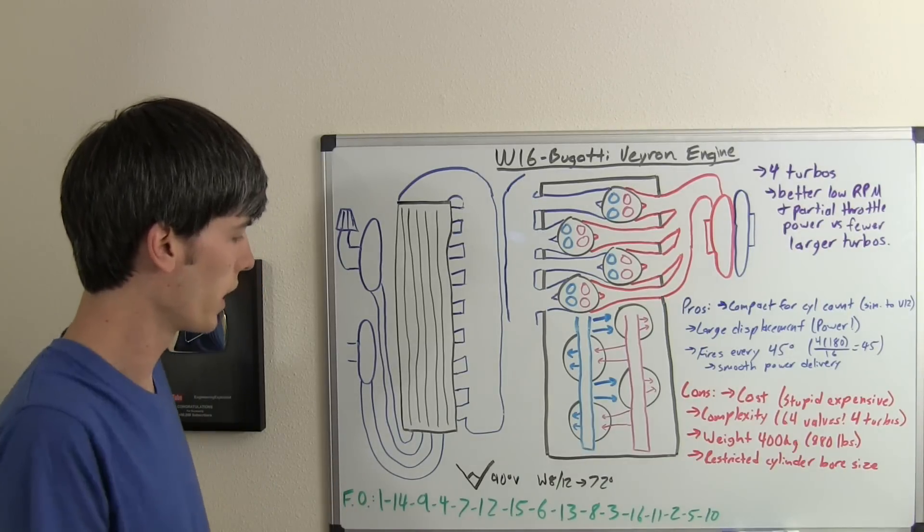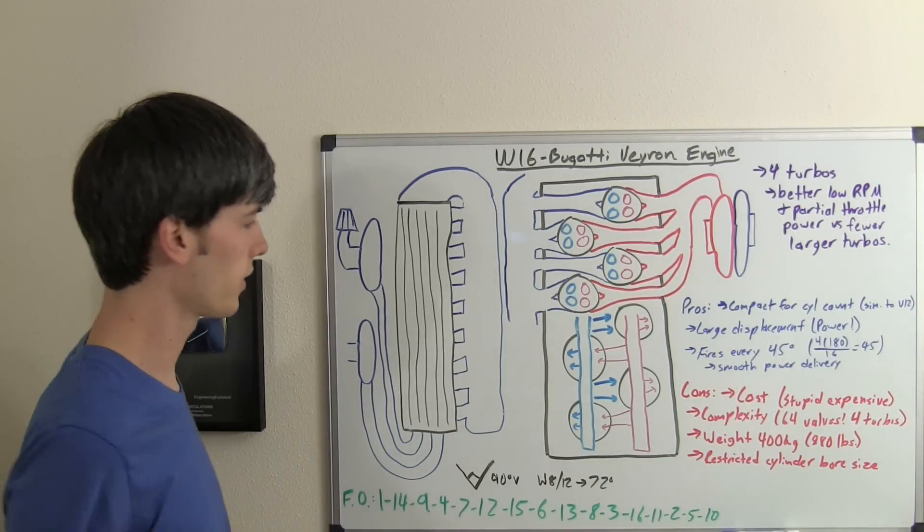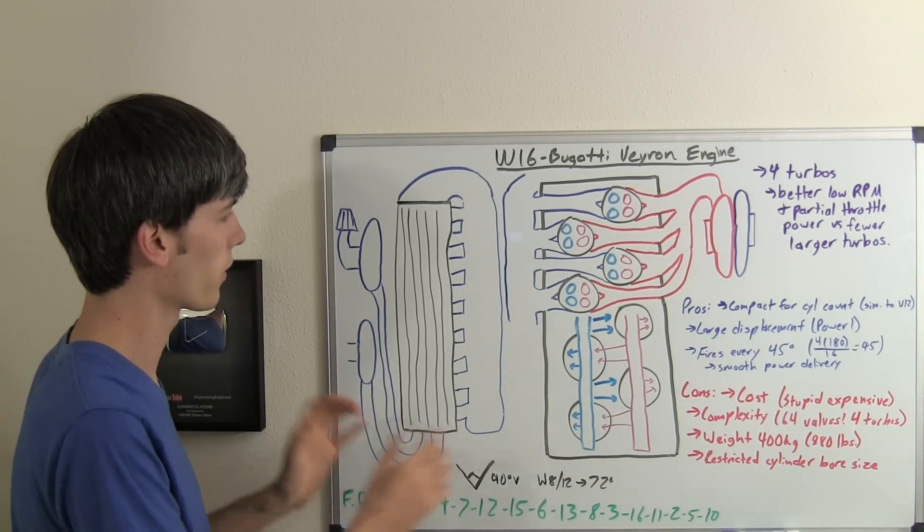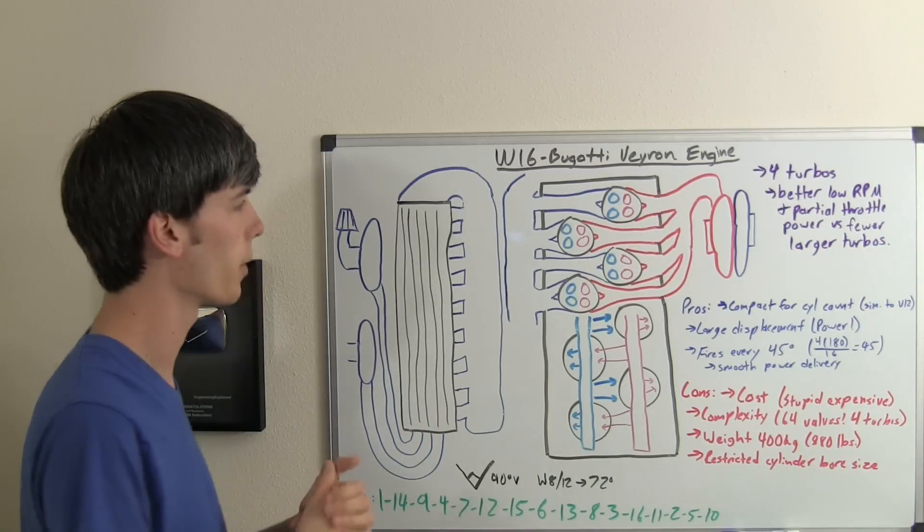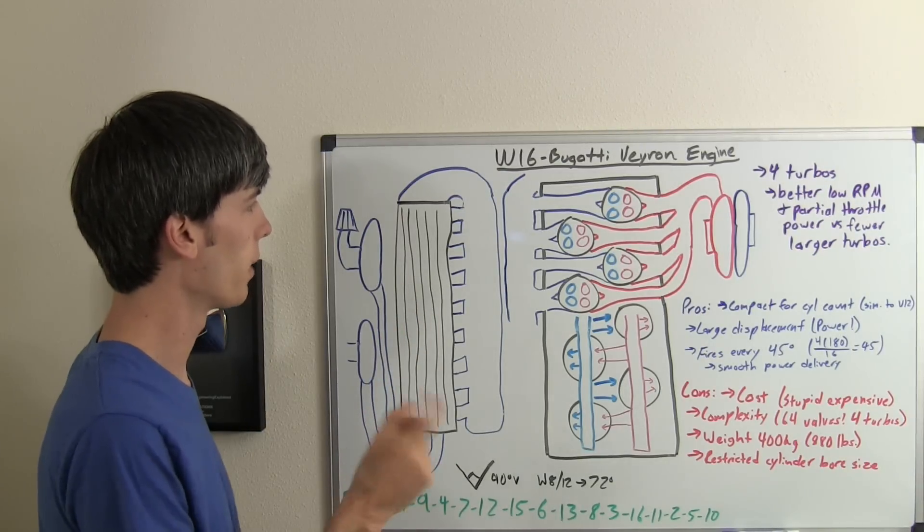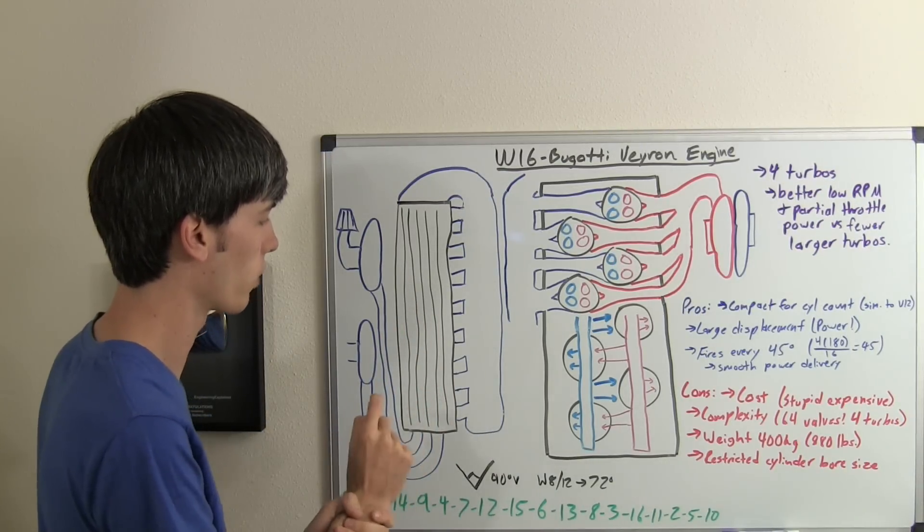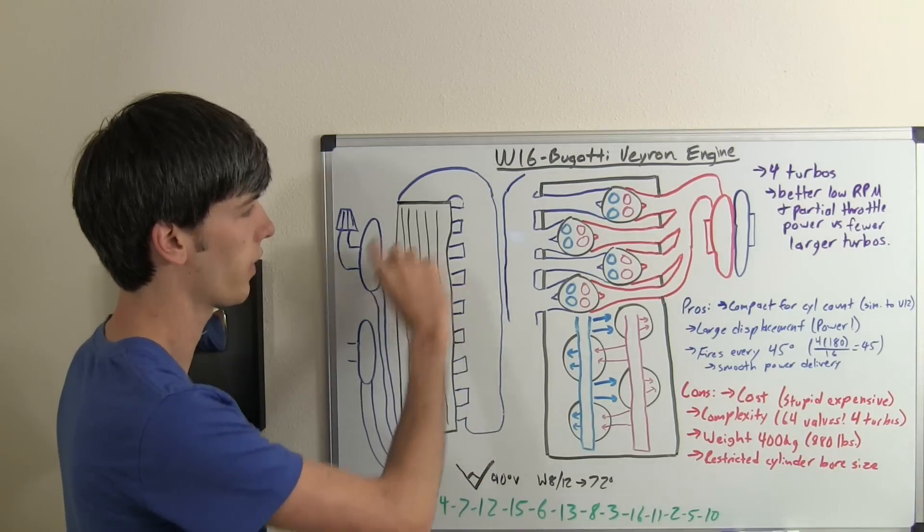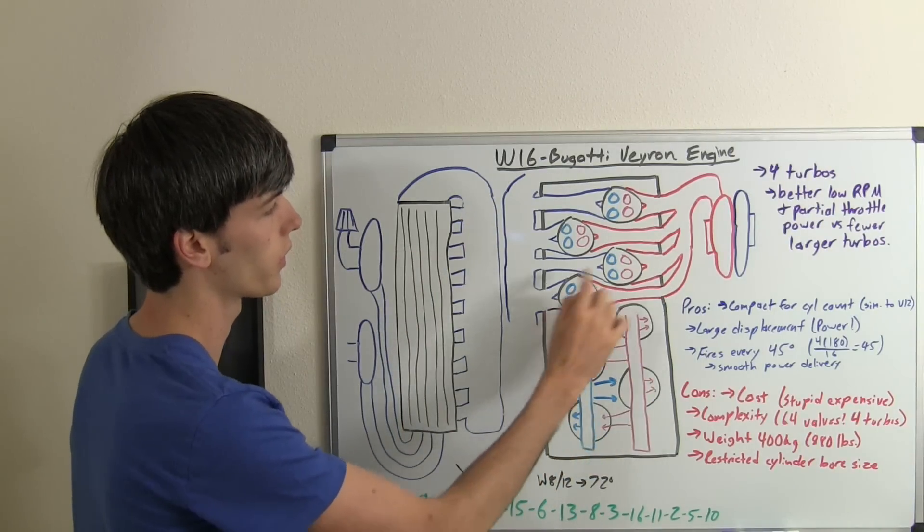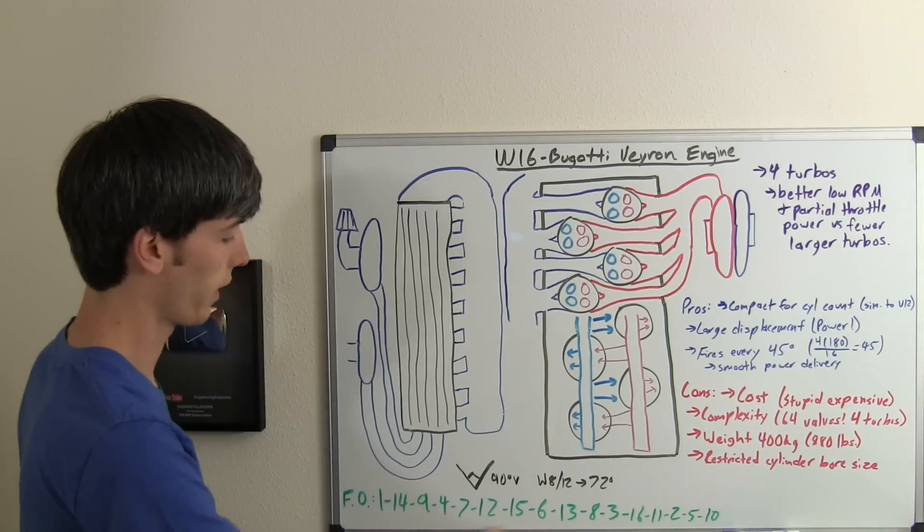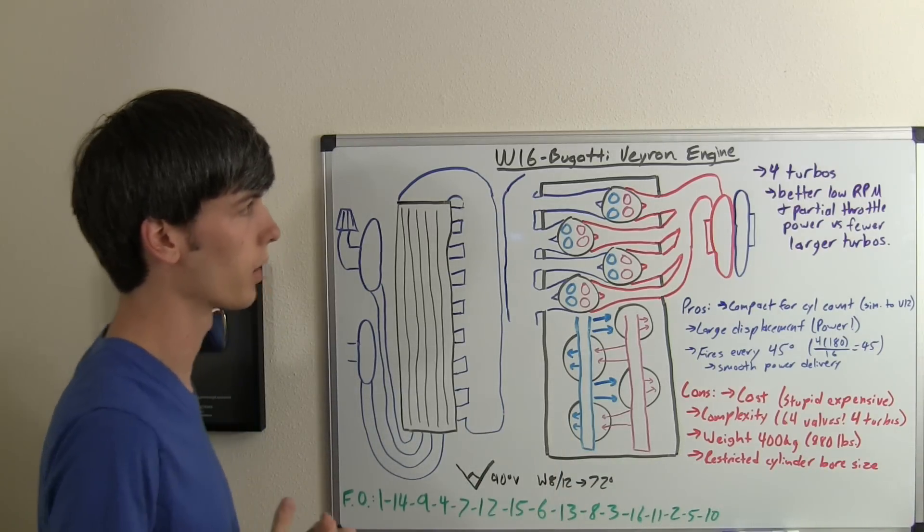Now the firing order, if you are so curious, is listed here. Basically how this works, I couldn't find any diagrams that explain what the numbering would be, but based on other engines from Volkswagen, I assume the cylinders would be numbered 1 through 16 as shown, and then the firing order as shown below.